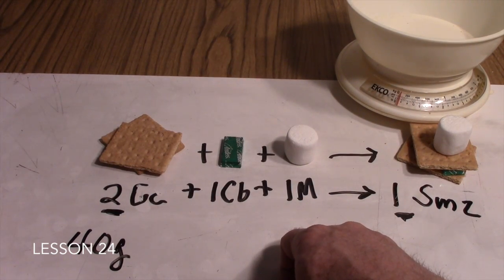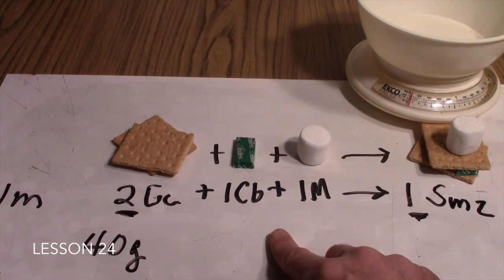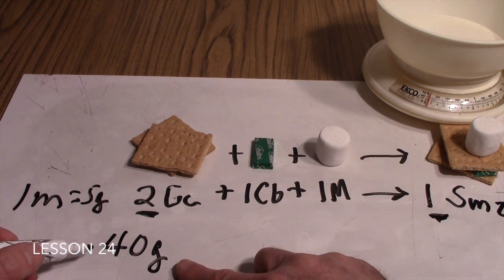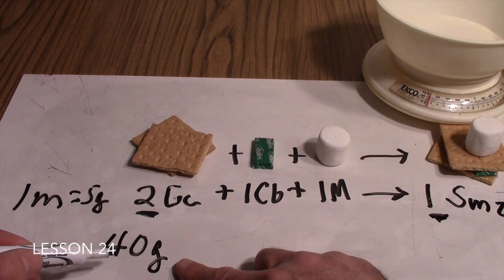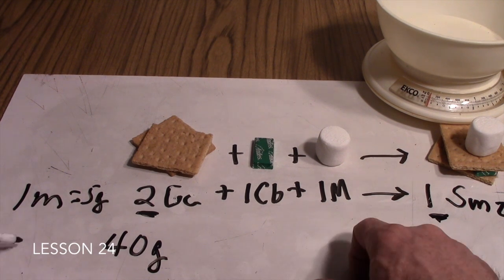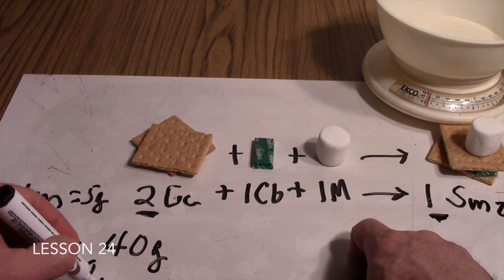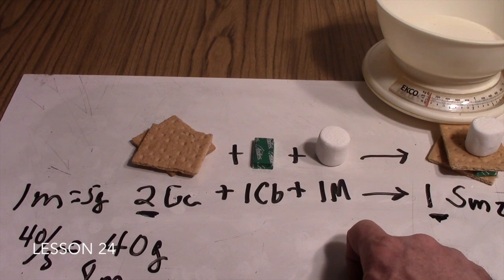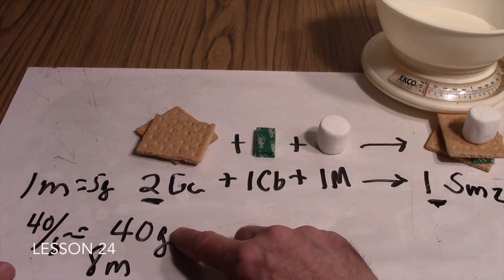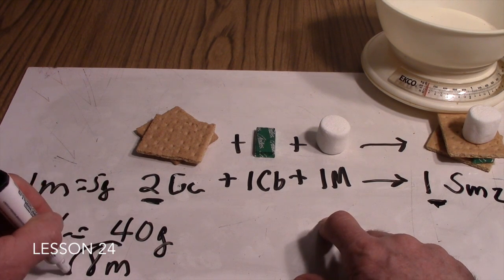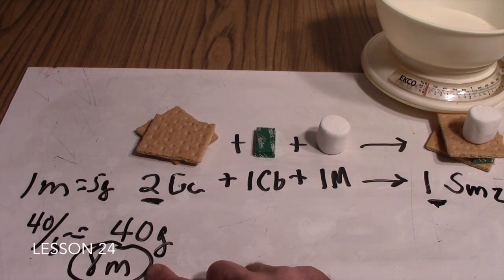Let's say that one mole of graham cracker weighs 5 grams. If we have been given 40 grams of graham crackers and we divide 40 by 5, we find that we have been given 8 moles of graham crackers. So 40 grams of graham crackers is equivalent to 8 moles of graham crackers. Now we have our ingredient in moles, so we can apply the mole ratio.